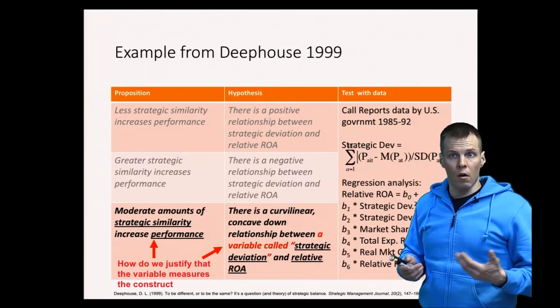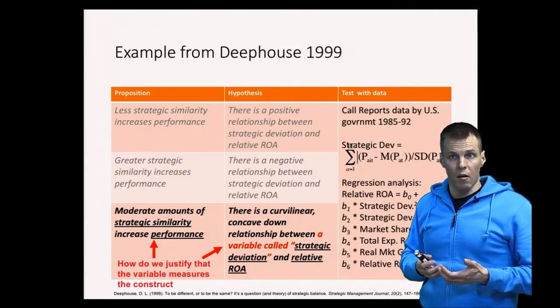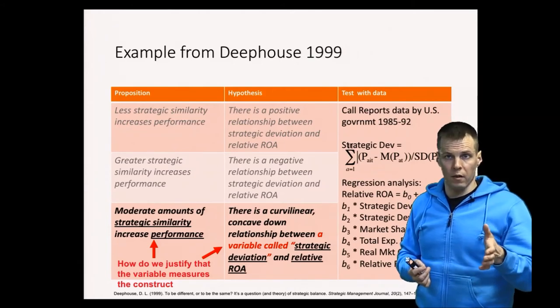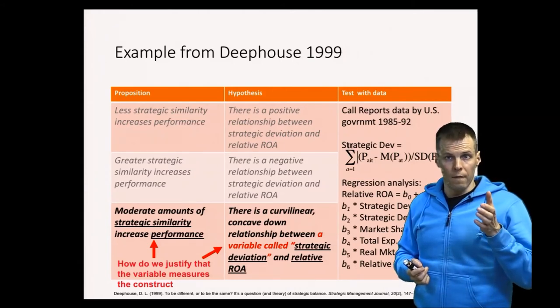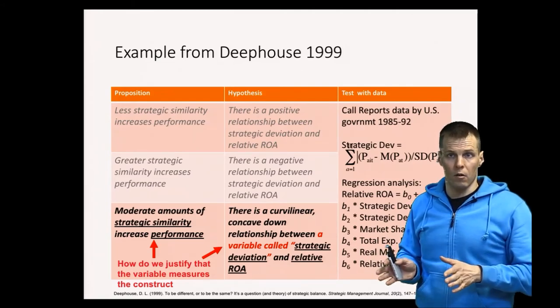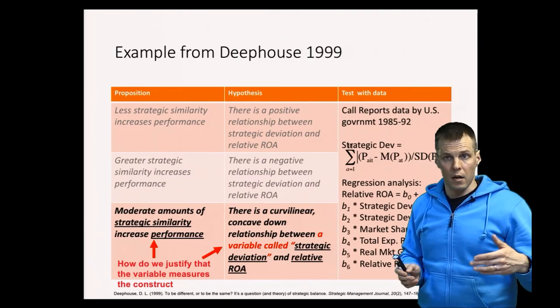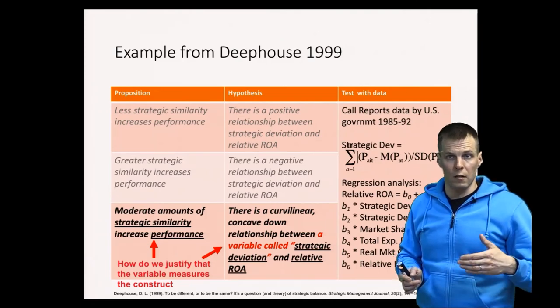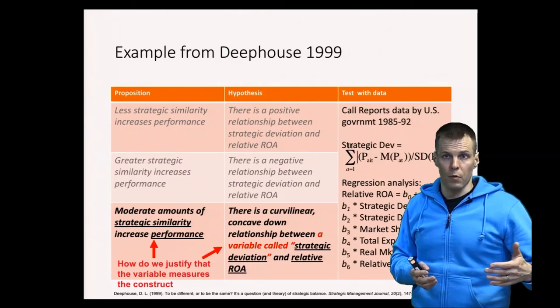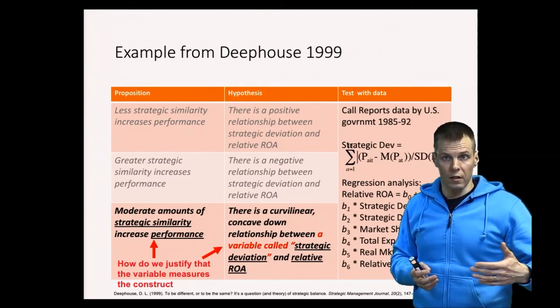So the way you argue for validity: there are a couple of different ways. You have to first explain the relevance of the variables or the data for your theory. In this case, asset categories are relevant for banks. Then the actual measurement approach: you either have to justify yourself, or you can say that others have used this approach and others have provided justification.